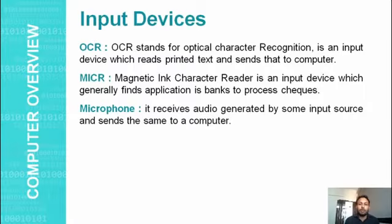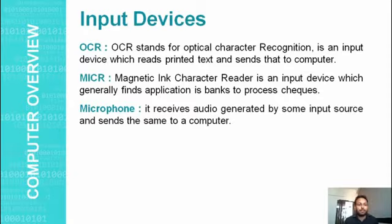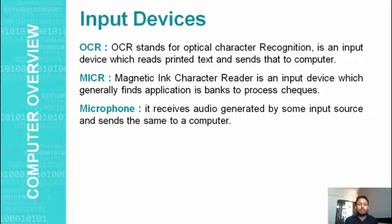Next is OCR — Optical Character Recognition or Optical Character Reader — an input device which reads printed text and saves it to the computer's memory. MICR — Magnetic Ink Character Recognition or Magnetic Ink Character Reader — is an input device generally found in banks. It is used to process checks and reads the magnetic characters printed on them. Microphone receives audio from the user and saves it to the computer.